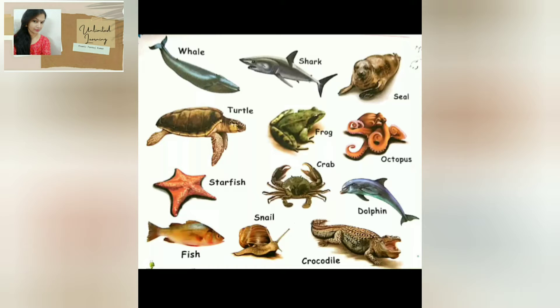Some animals live both on the land and in the water. The animals who can live both on the land and in the water are called amphibians. Examples: crocodile, frog, and otter.